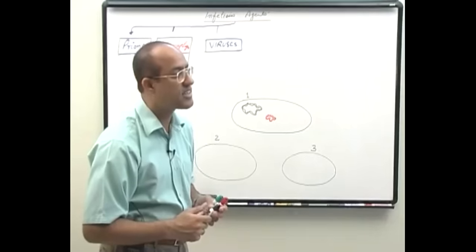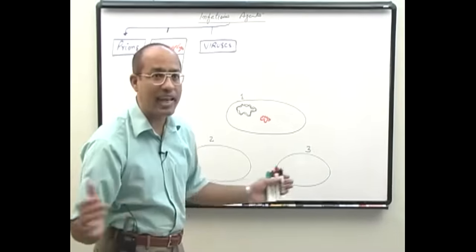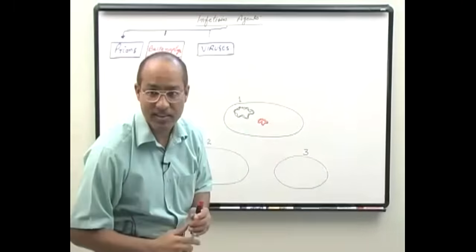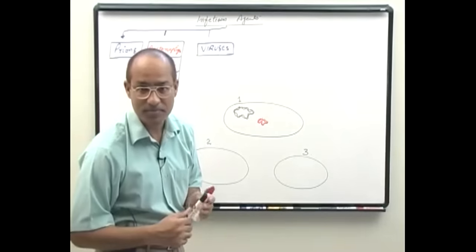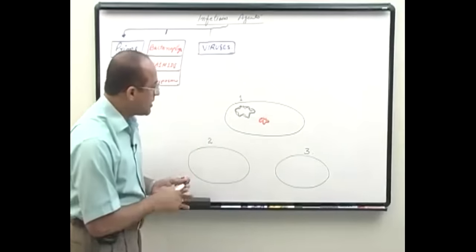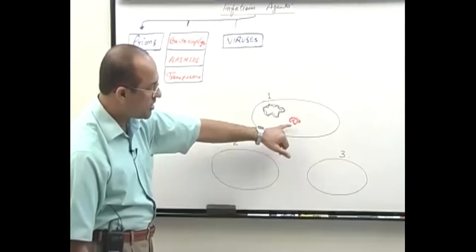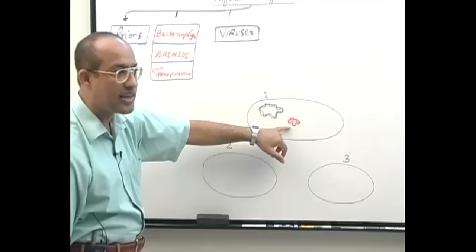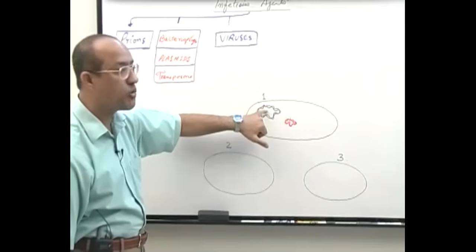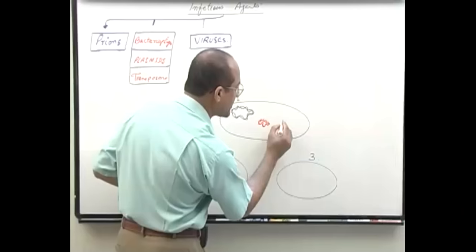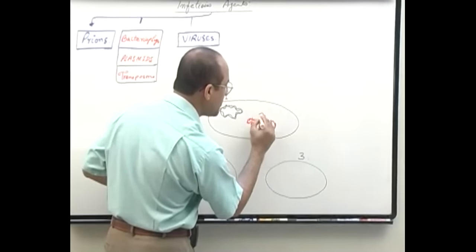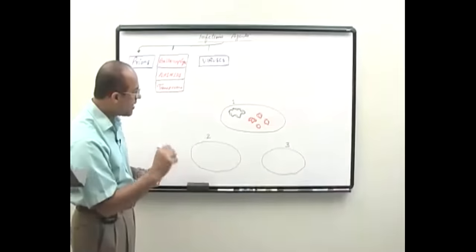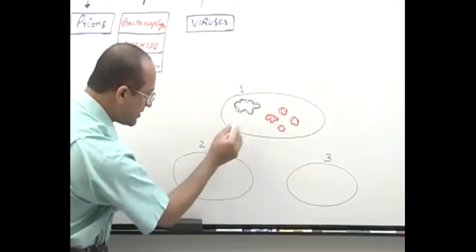The plasmid is extra-chromosomal double-stranded DNA with the capacity to replicate on its own, independent of the chromosome, while the main chromosome may not replicate. Multiple copies of the plasmid can accumulate. What is the clinical relevance of plasmids? This is just a basic introduction — we'll have a full lecture on plasmids later.